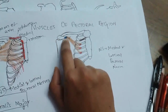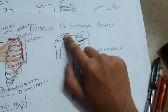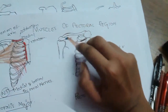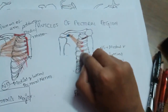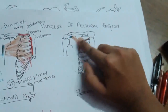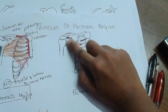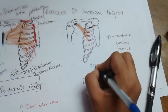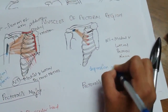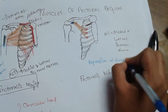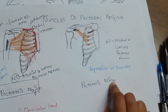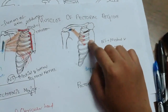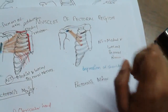The glenohumeral joint is the shoulder joint. Whenever pectoralis minor contracts, the shoulder joint moves downward, because the origin is fixed and the insertion moves. So the main action is depression of the shoulder joint. It is also involved in respiration, as it is attached to the ribs. This is pectoralis minor.